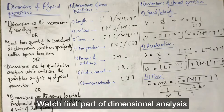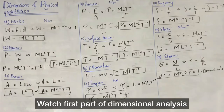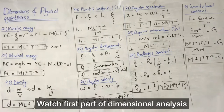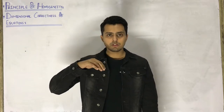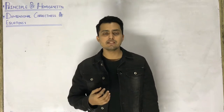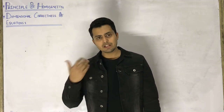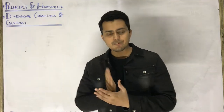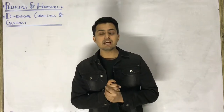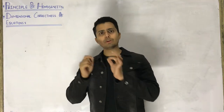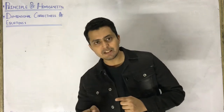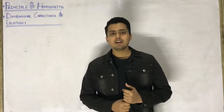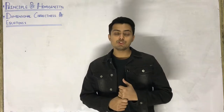In that first part, we read definitions and then learned how to find the dimensions of different physical quantities, whether fundamental or derived. Students who are watching this Part 2 directly without watching Part 1 — I suggest you check that first, so you have an idea of what dimensions are and how we derive them, because today we will use those dimensions directly without re-deriving them.